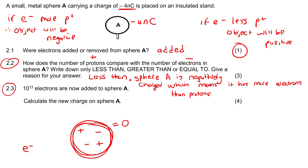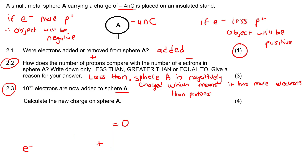The next question says that 10 to the power of 13 electrons are now added to sphere A — calculate the new charge on sphere A. I don't want you to just jump to formulas; think about this carefully. Sphere A is currently negative 4. Because it's negative, it already has a lot of electrons. Now we're going to add 10 to the 13 electrons — that is an enormous number, 1 with 13 zeros.